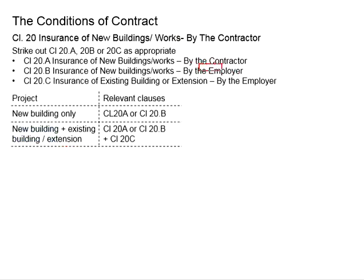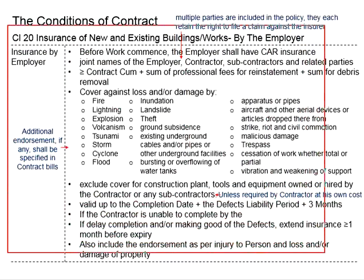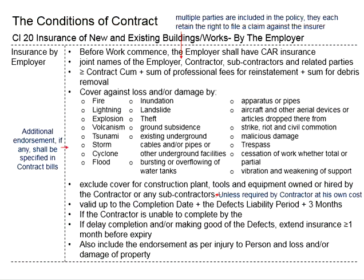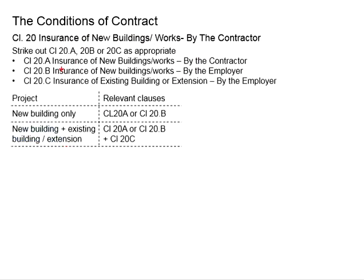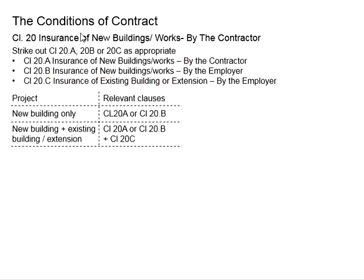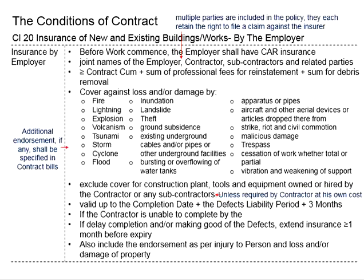If the employer chooses to have the insurance on their side, Clause 20A will be struck out and Clause 20B becomes relevant. Since the details are largely the same, Clause 20B and 20C are discussed together. Clause 20C relates to insurance for existing buildings within the site that may be affected. The same principle applies — it is now the employer who must insure, before the commencement of work.